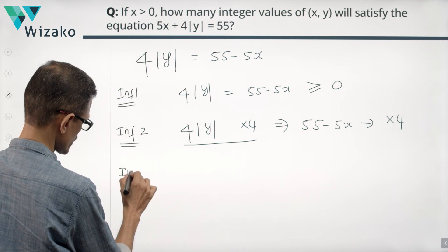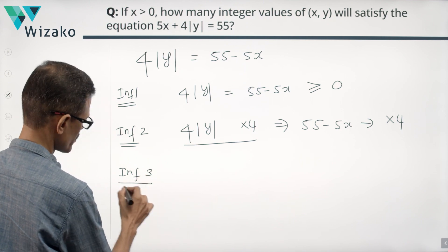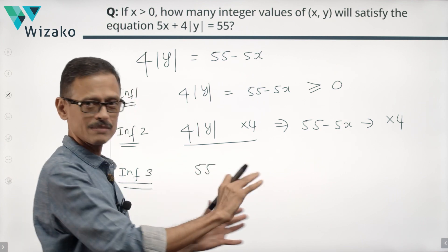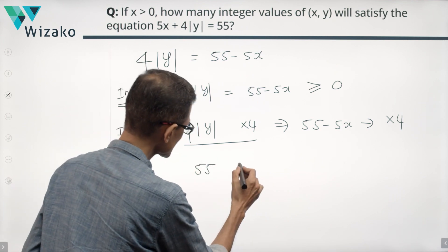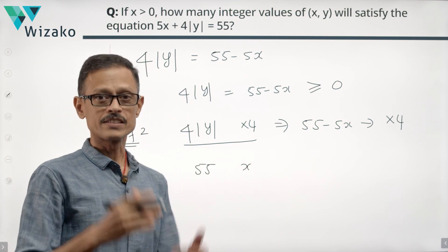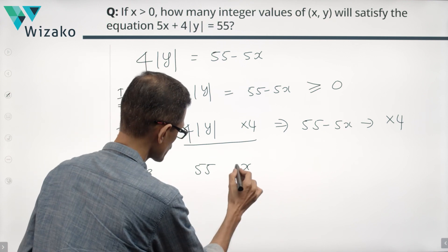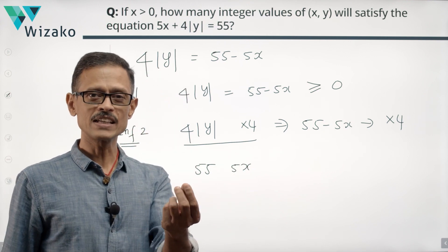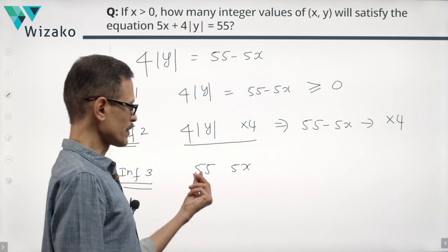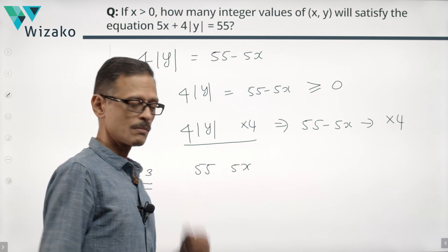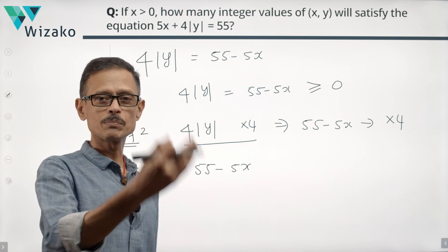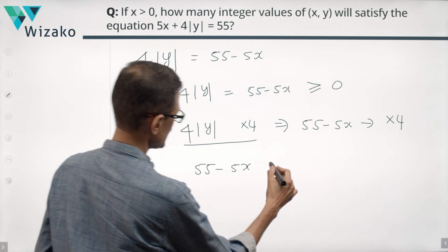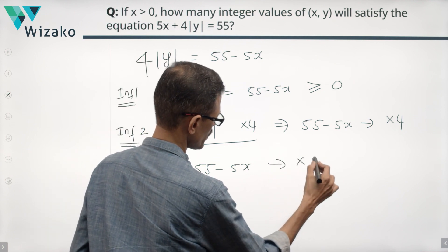Moving to the third inference — again very, very important: 55 is a multiple of five. X is an integer — actually a positive integer — which means 5x is going to be a multiple of five, because five times an integer is a multiple of five. 55 is a multiple of five; 5x is a multiple of five; which means 55 minus 5x — a multiple of five minus another multiple of five — will be a multiple of five.